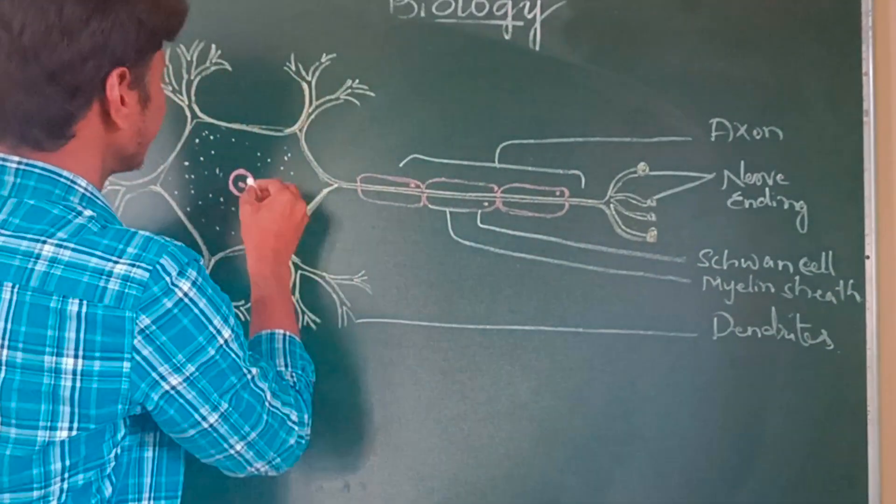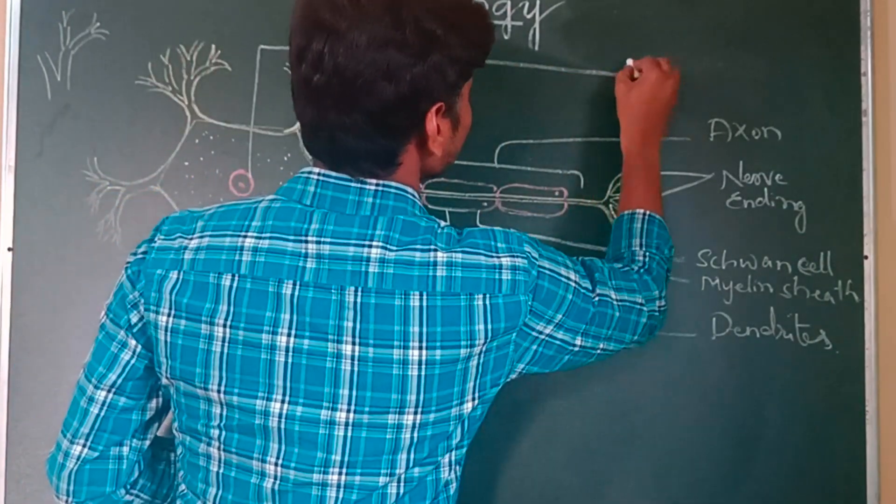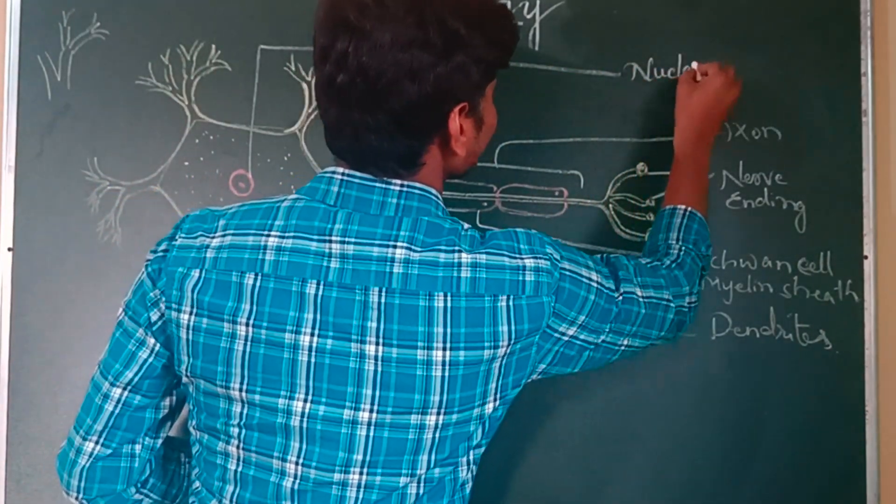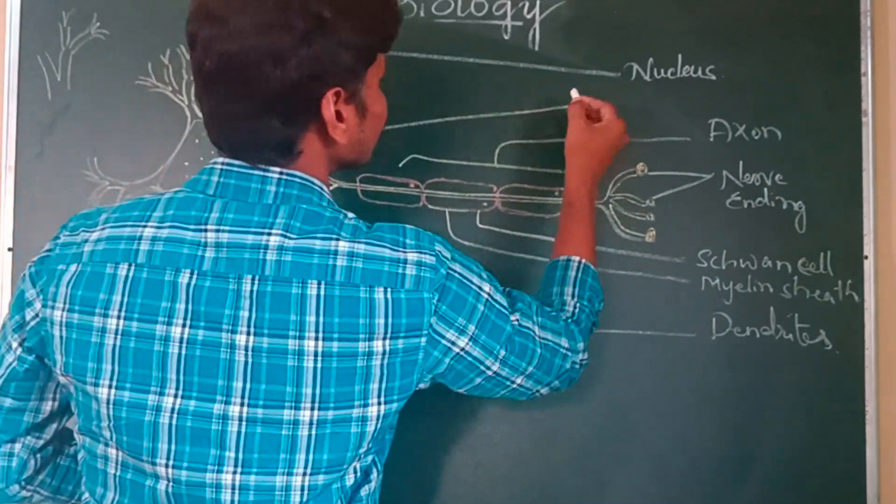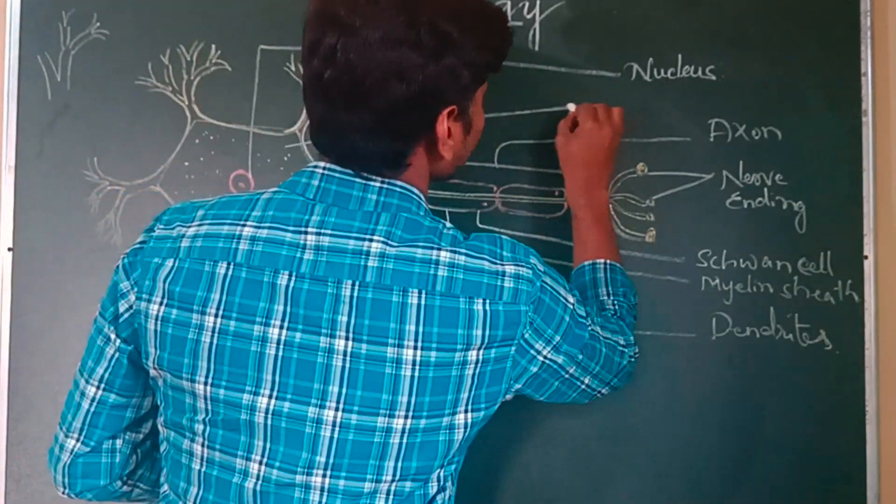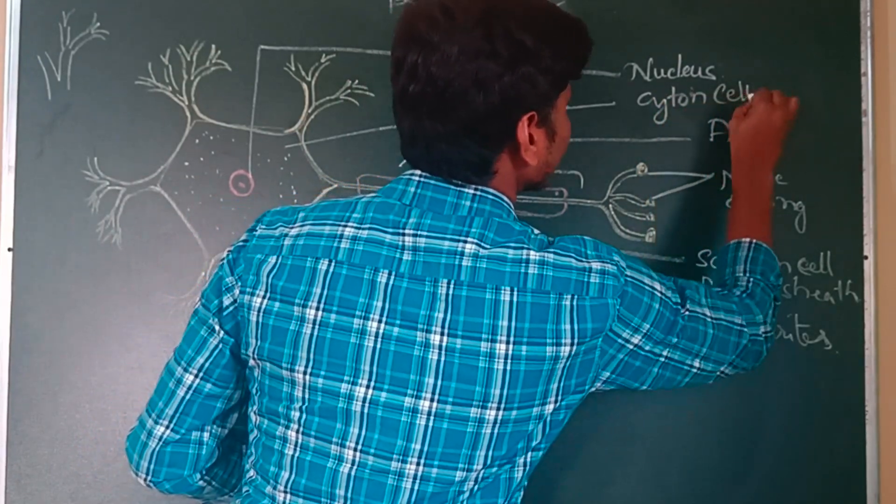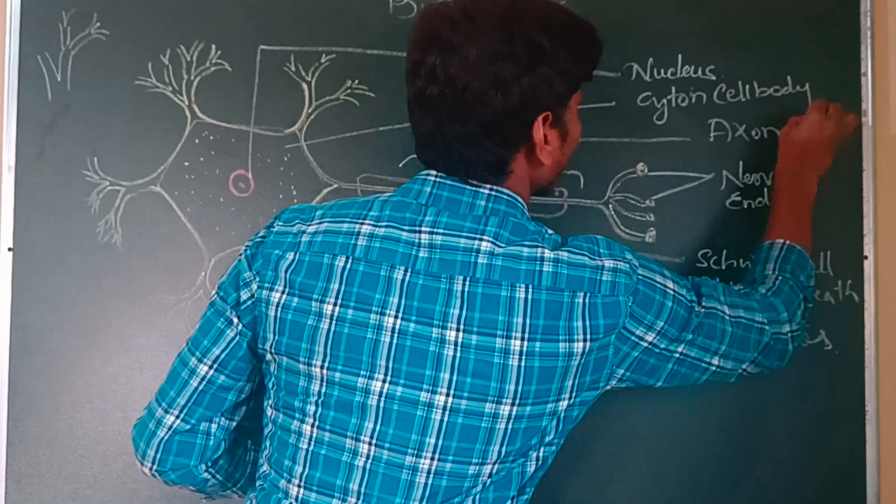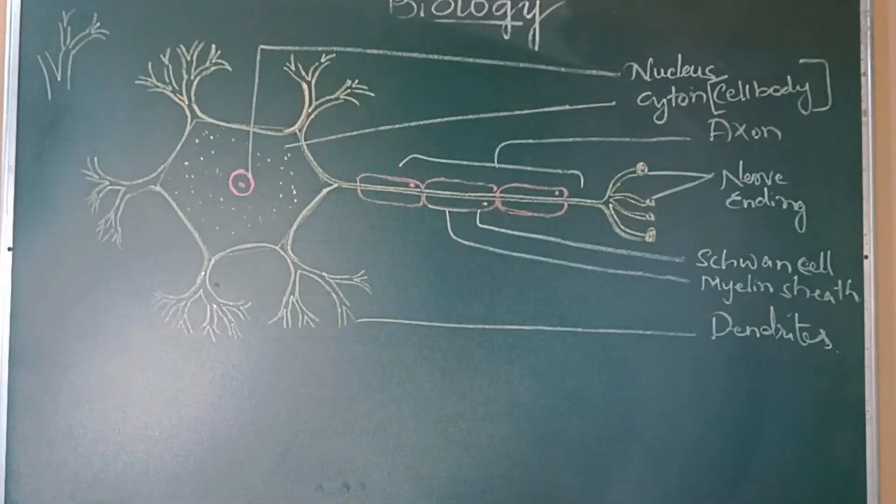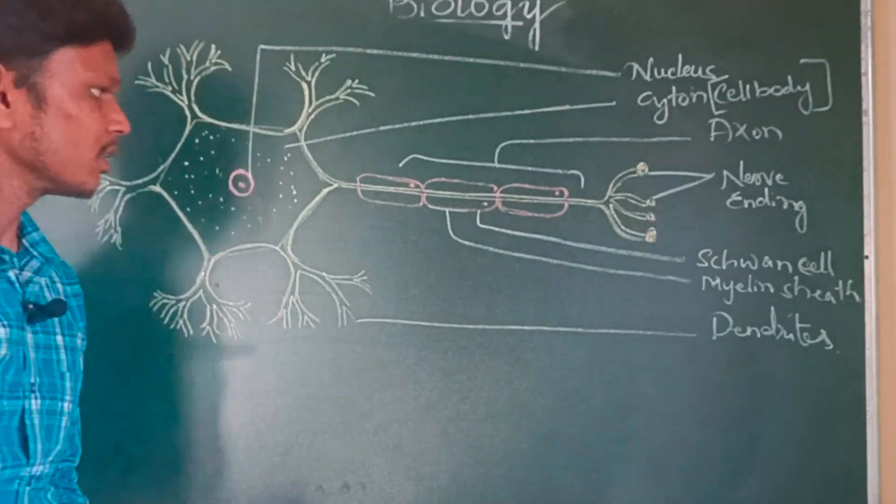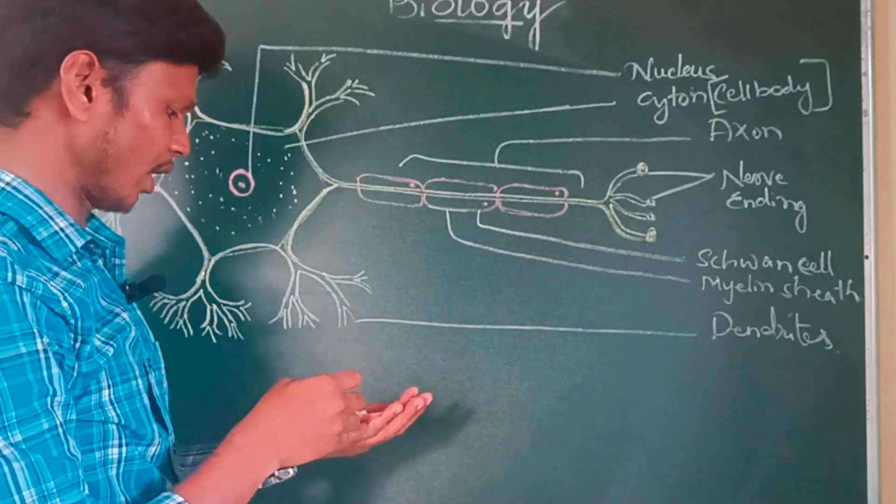And this sheet - what you are going to find, this sheet is called as myelin sheath. Myelin sheath. And this is called as nucleus. Is called as nucleus. And this cell - no, the structure is called as cytone or cell body. Cell body or cytone.